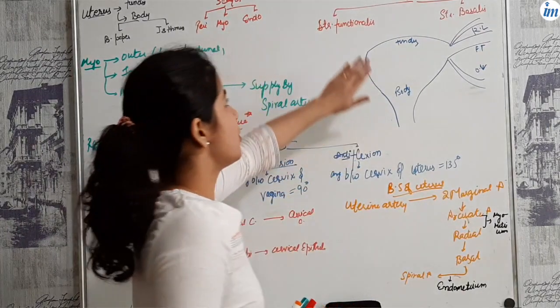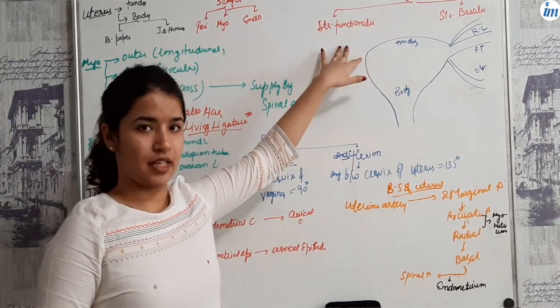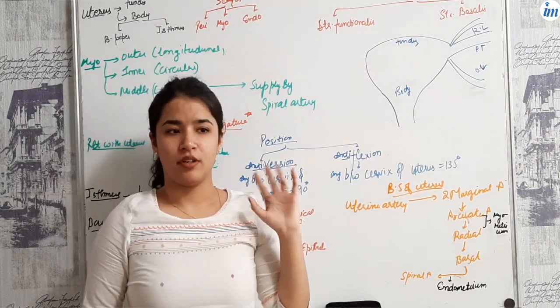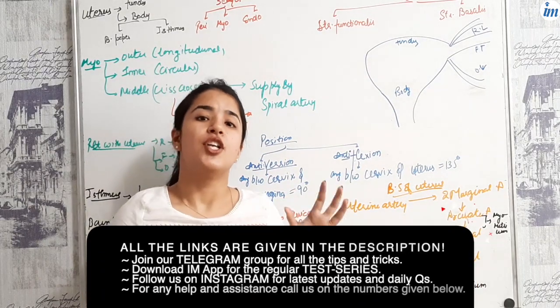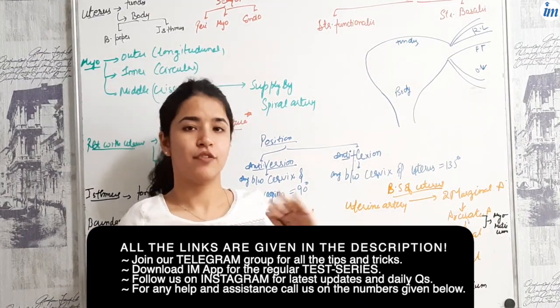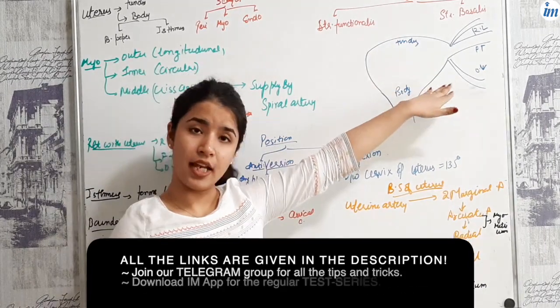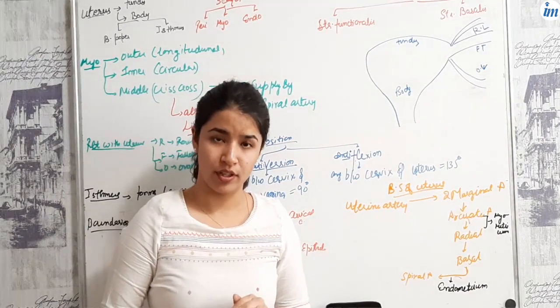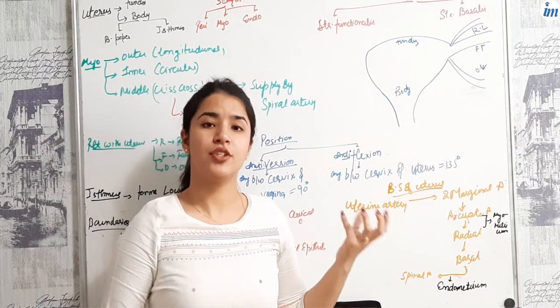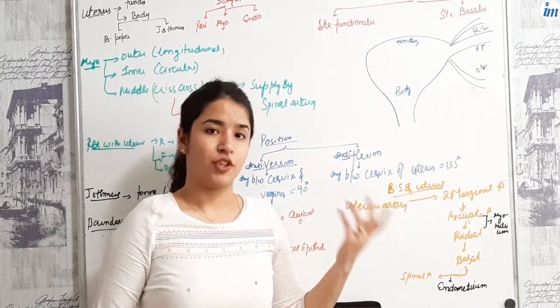Generally, the stratum functionalis, the important point is, during menstruation functionalis will shed off, whereas stratum basalis will remain intact and it helps in the regeneration of stratum functionalis further.